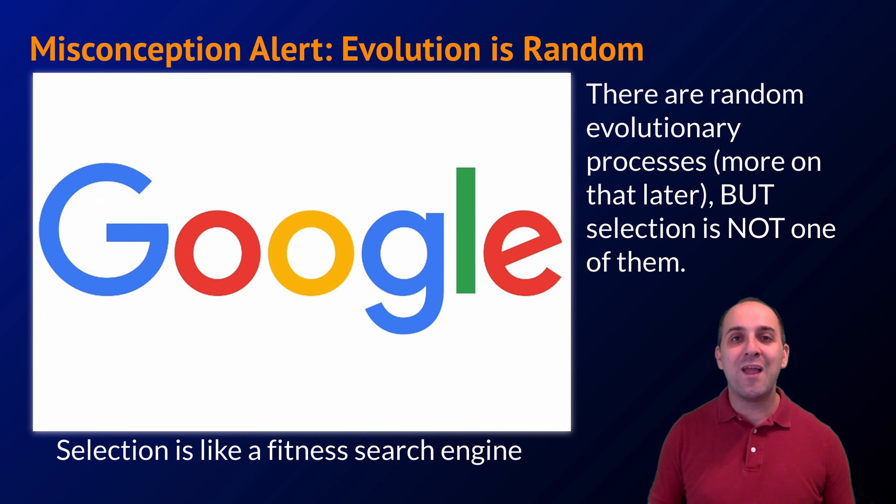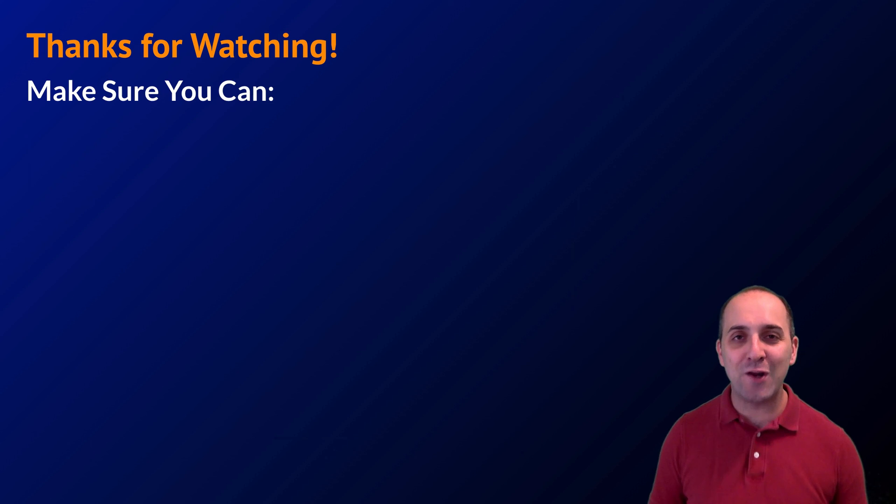Natural selection works pretty much the same way. Of course, the major difference is, instead of it being me specifying the criteria for successful results, environmental conditions are determining which organisms are best adapted and survive, and which ones do not. Thanks so much for watching our discussion of a couple of examples of natural selection at work.